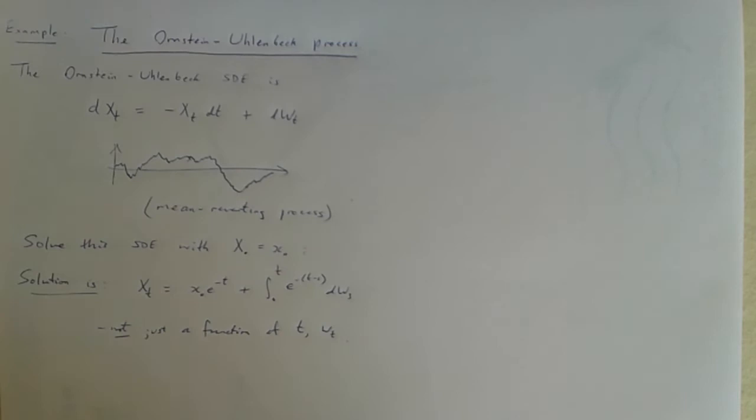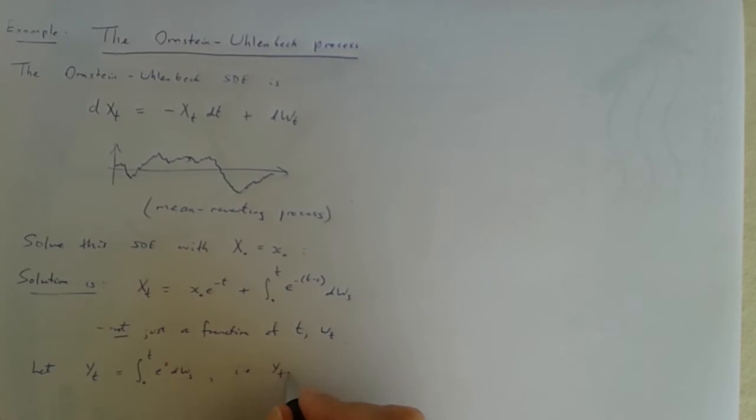However we can get around that if we do something else as well. What we're going to do is introduce another process y which will be the stochastic integral part. So what does that mean actually? If y is a stochastic integral, what is it? It's an Ito diffusion.